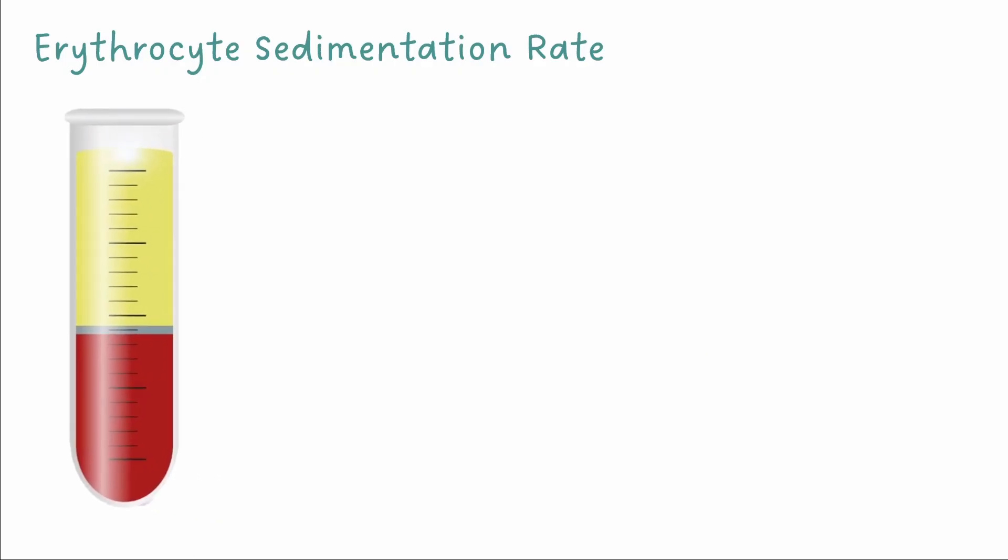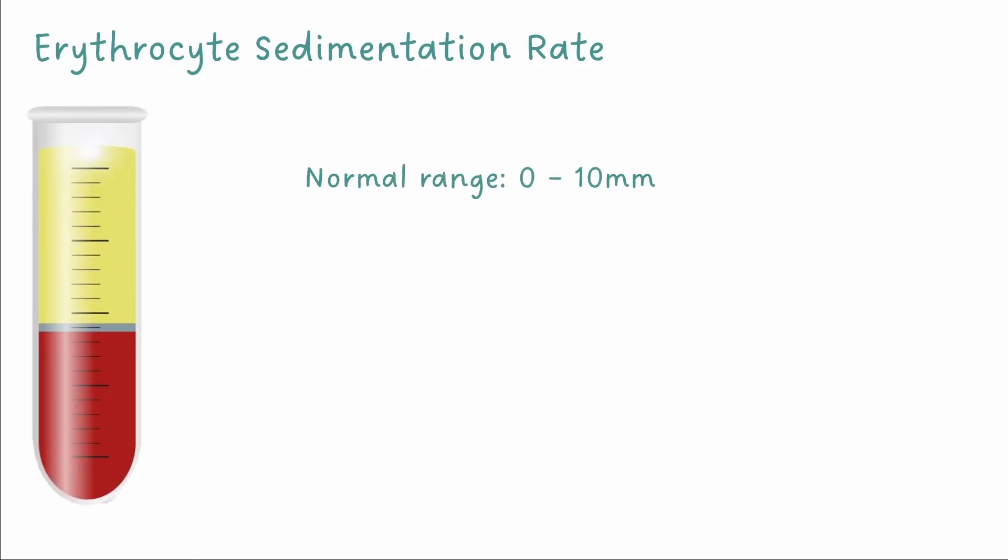Its normal range is 0 to 10 millimetres. It takes 24 hours to start rising which is a slower response than CRP. This makes ESR less useful if looking for an acute inflammatory response, for example with infection.